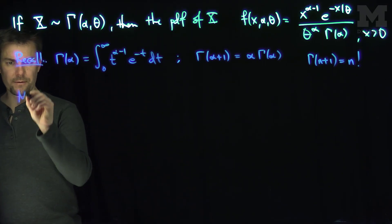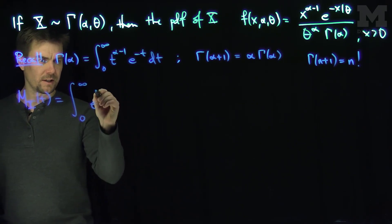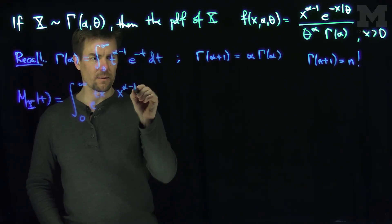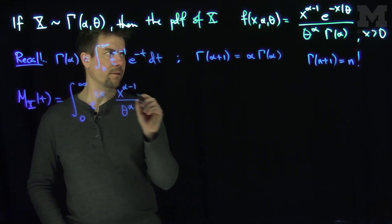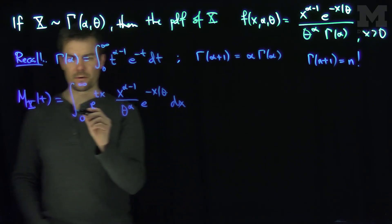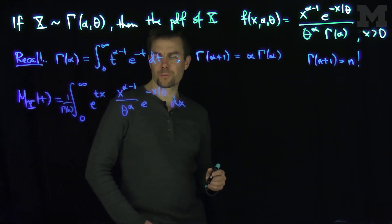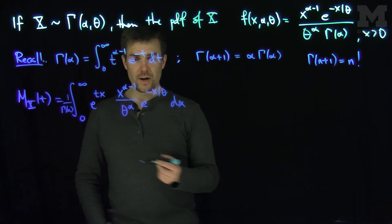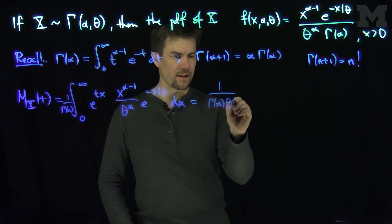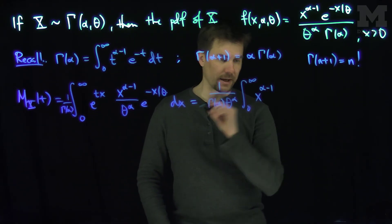We're going to compute the MGF of x. It's going to be the integral from zero to infinity of e to the tx, times x to the alpha minus one over theta to the alpha, times e to the negative x over theta, dx. Let's pull one over gamma of alpha and one over theta to the alpha out in front of the integral. We're going to make a substitution now. We'll write this as one over gamma of alpha times theta to the alpha, times the integral from zero to infinity, and put all the exponents together with x to the alpha minus one.